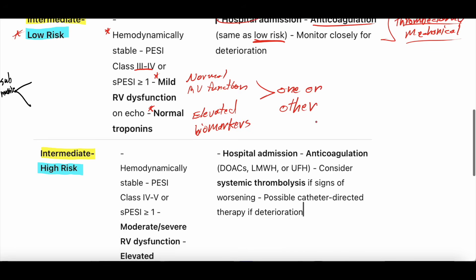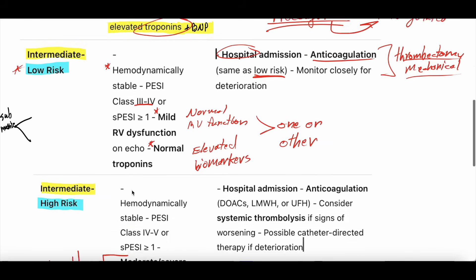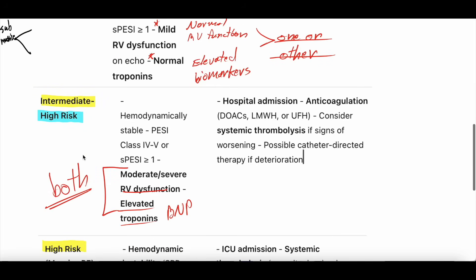Intermediate high risk is where you have both RV dysfunction and elevated biomarkers — troponin or BNP — and usually a higher PESI class, maybe four or five. Of course the patient should be anticoagulated, with options including DOACs like apixaban and rivaroxaban, low molecular weight heparin such as Lovenox, or unfractionated heparin like a heparin drip.